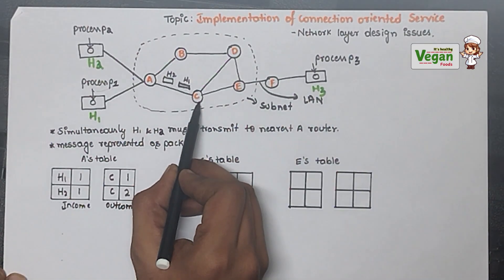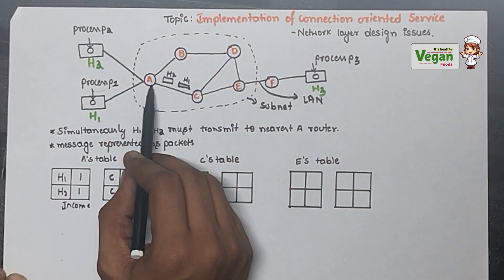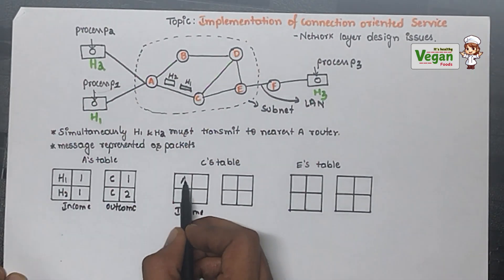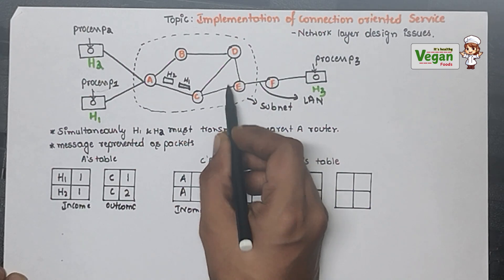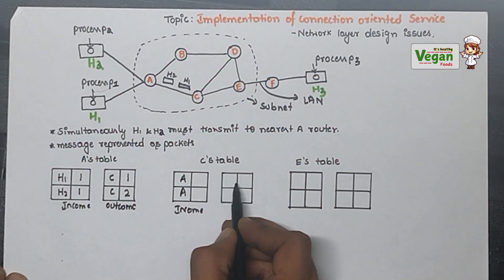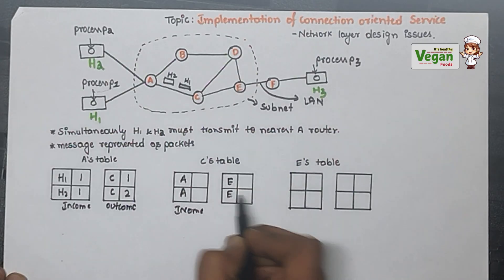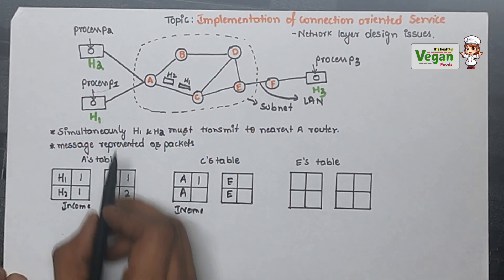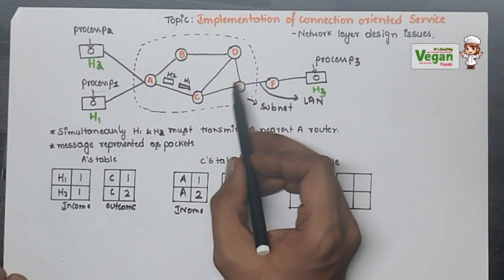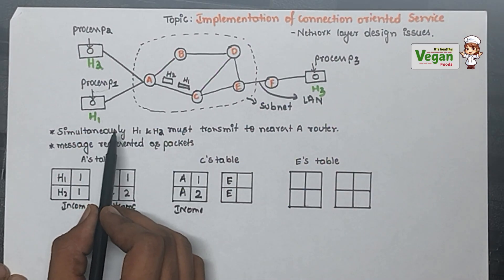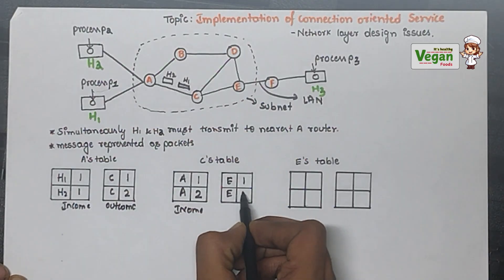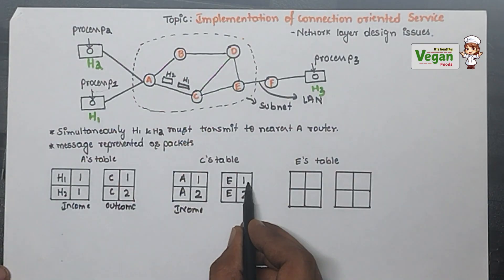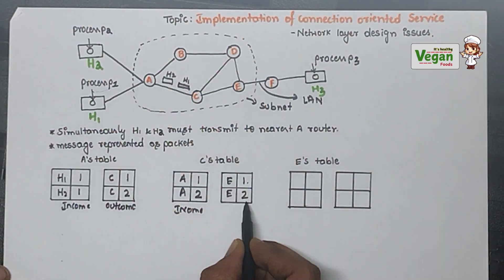Now let's write the table for Router C. C is receiving information from A — that is the incoming. It is outputting the packets to the next router, Router E. When encoding: if H1 comes it is 1, if H2 comes it is 2. Since we have only two messages from Host 1 and Host 2, Host 1's message is represented as 1 and Host 2's message as 2.